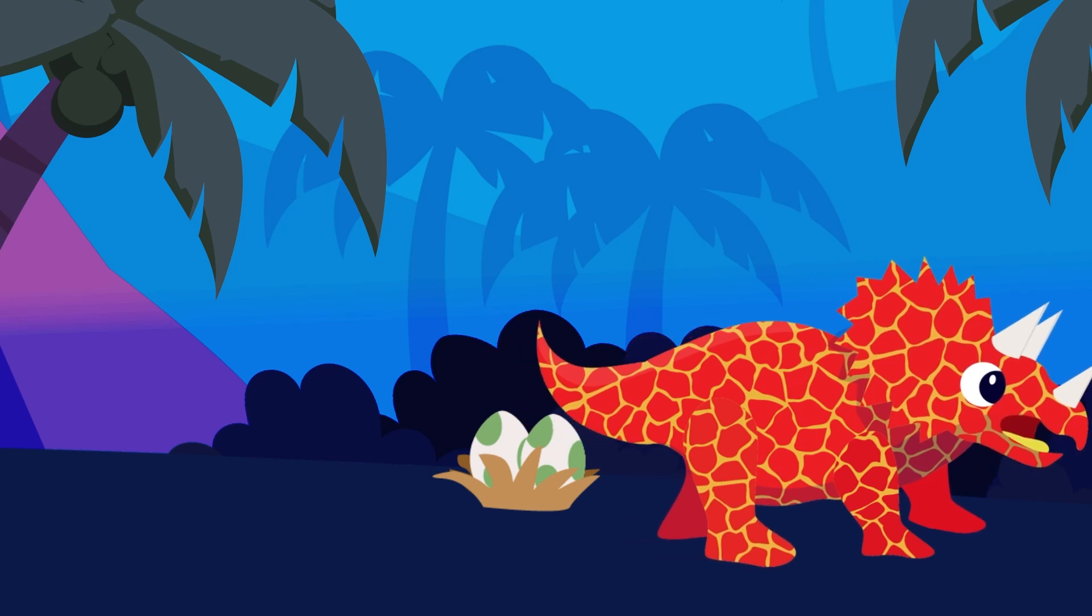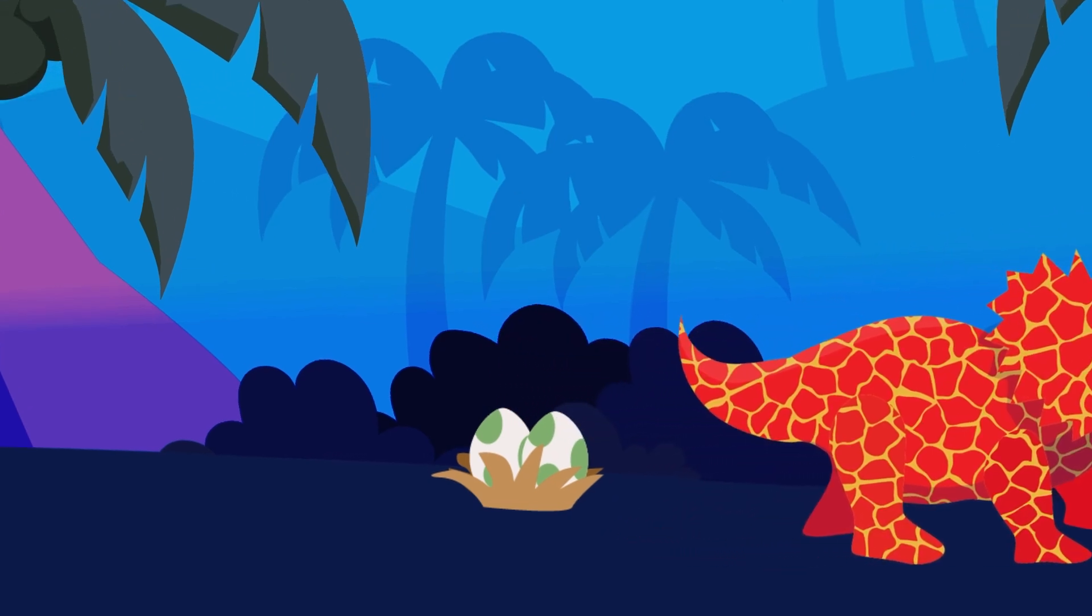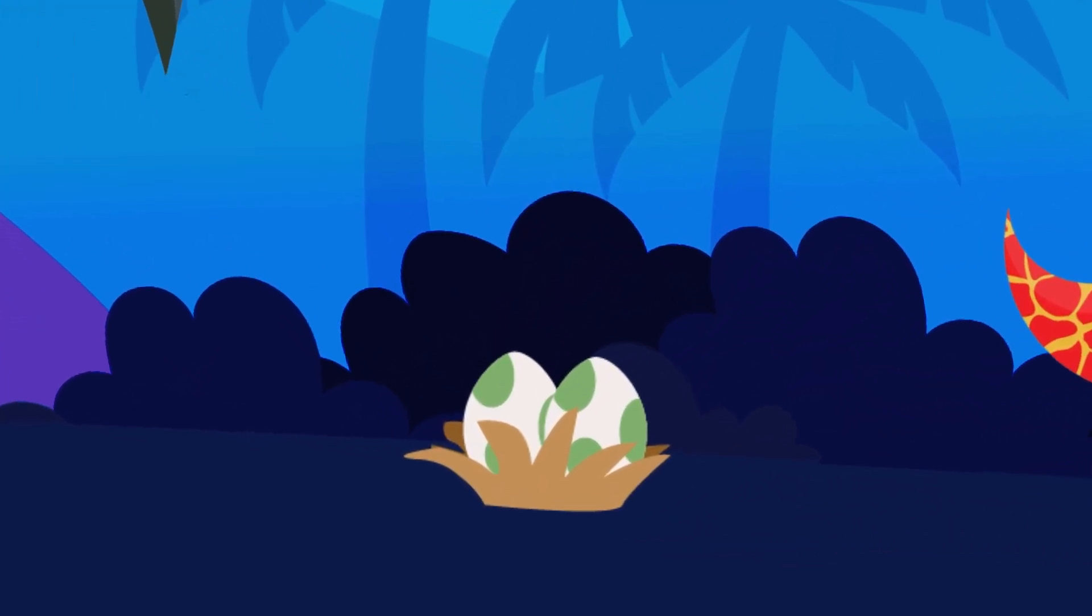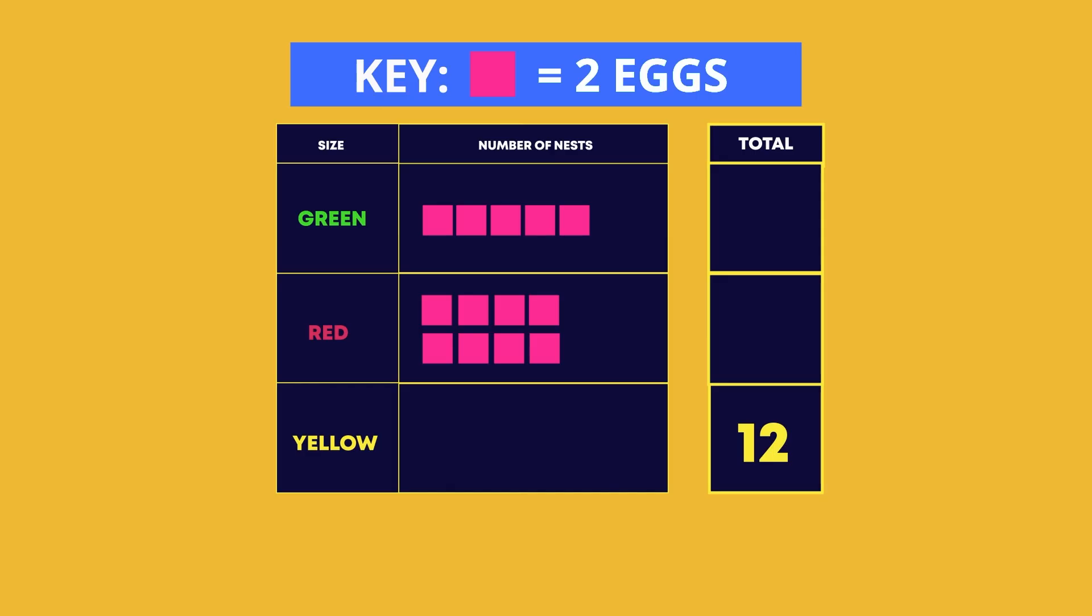Look friends, some of the dinos laid eggs. Isn't it exciting? Our space rangers made another pictogram to show how many eggs there were. In this pictogram, one square equals two eggs.